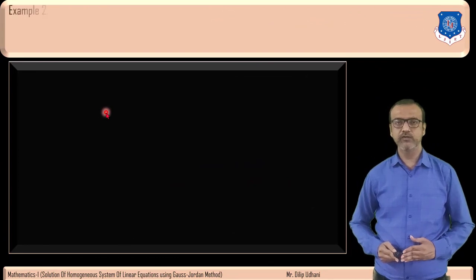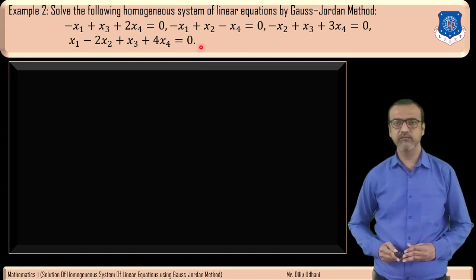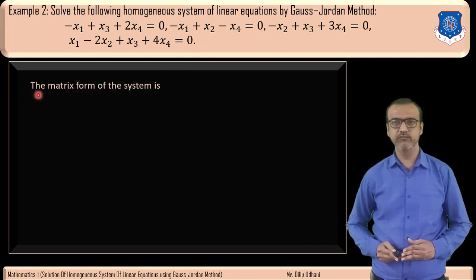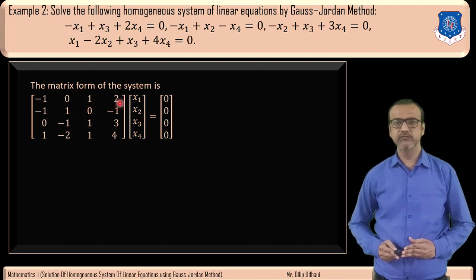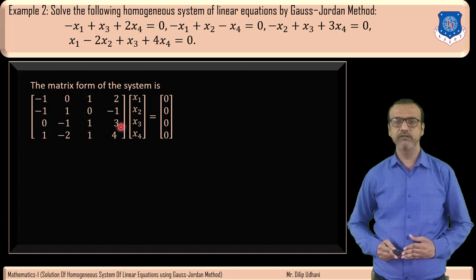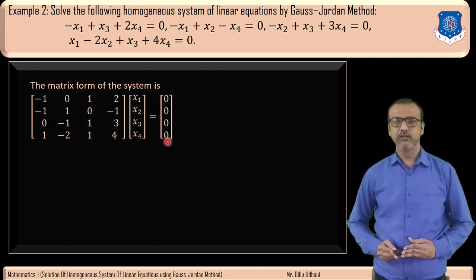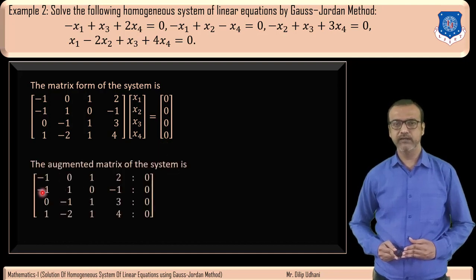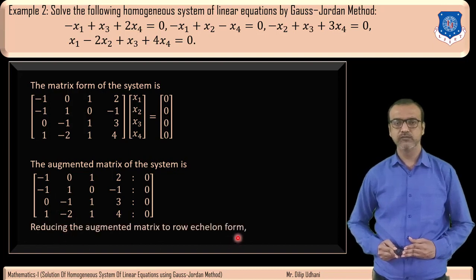Now we will see example number 2: solve the following homogeneous system of linear equations by Gauss-Jordan method. The coefficient matrix A has rows: [-1, 0, 1, 2]; [-1, 1, 0, -1]; [0, -1, 1, 3]; [1, -2, 1, 4]. The variables are x1, x2, x3, x4 and the right-hand side is the zero vector. We write the augmented matrix [A | 0] and proceed to reduce it to row echelon form.